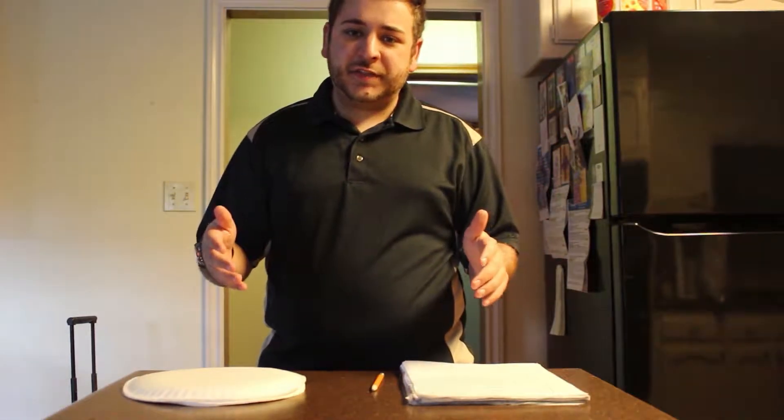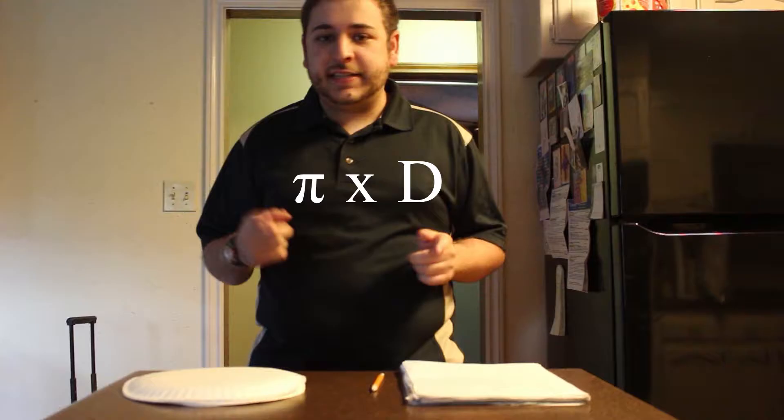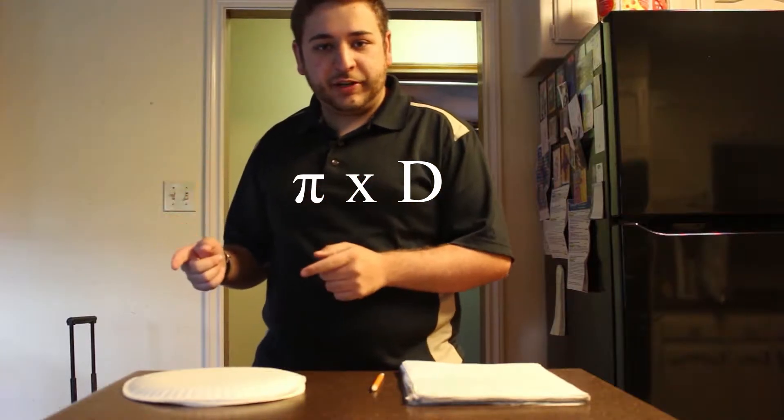Hey guys, my name is Christian and today on How to Math, we're going to learn how to find the circumference of a circle. To find the circumference of a circle, you're going to need the formula pi times diameter.